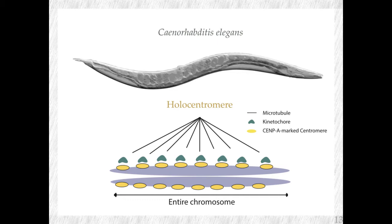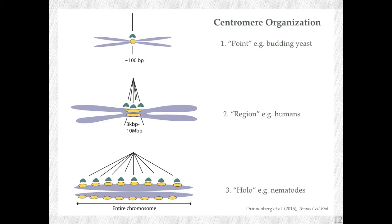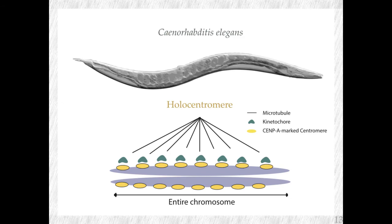C. elegans has this holocentromere form of centromere organization. I still want to stress that Sempe incorporation is never random — in all cases it's so important that it knows where to go and goes to the right places where the centromere needs to be formed. C. elegans has this organization, and here I'd like to give you a bit of a breather and introduce you to C. elegans as a model system, and in particular as a model system for studying cell division.